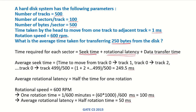The average seek time is not given, so we have to compute it. Seek time is the time required by the head to move to a particular track. To compute the average seek time, we calculate the time to move from track 0 to track 1, track 0 to track 2, all the way up to track 499, since there are 500 tracks total.